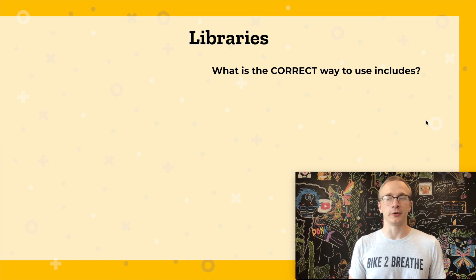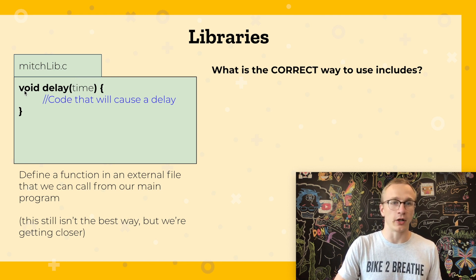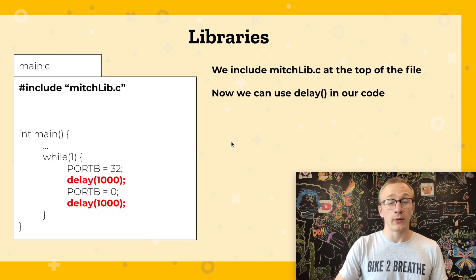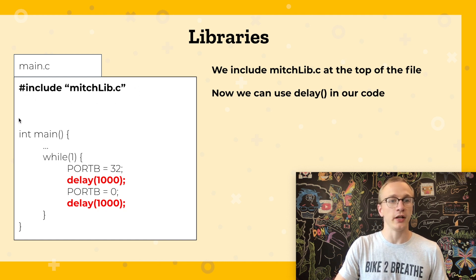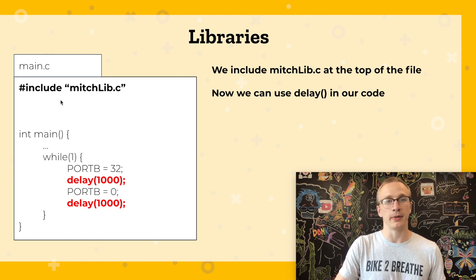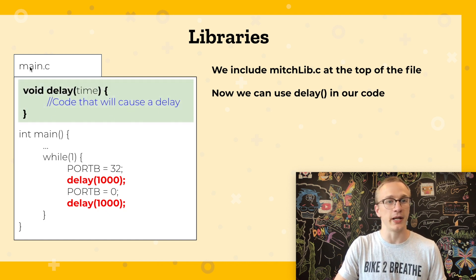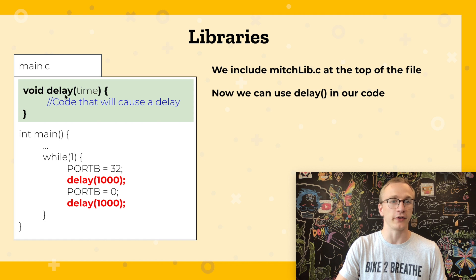So if that's a bad way to use include, what is a better way? Let's create a file called mitchlib.c and instead of putting random code in it, we'll declare a function. This function will be called delay and it will just wait for a certain amount of time. Once we have that file, in our main code we can do an include which will reference that library we just created, and now we have access to the delay function. Just remember that the include statement is literally copy-pasting the contents from that other file in its place — the same as creating the function inside main.c and pasting it at the very top.